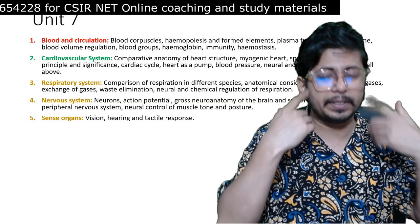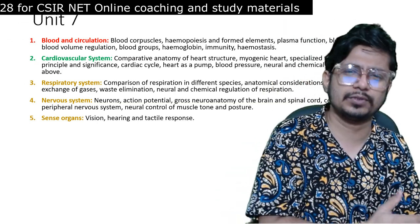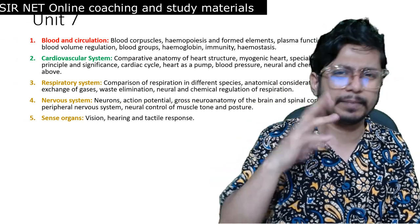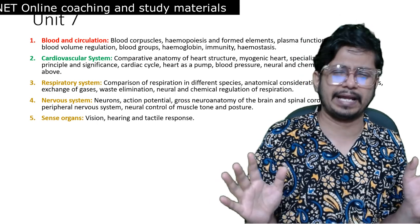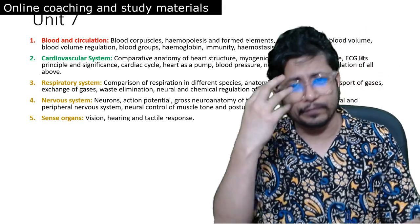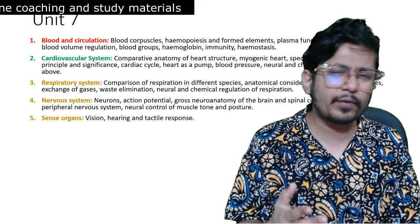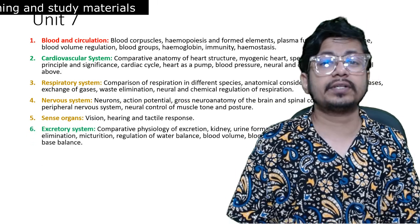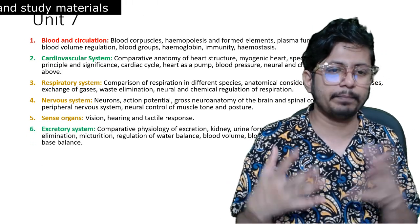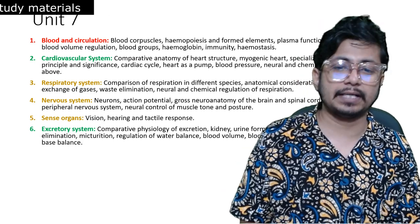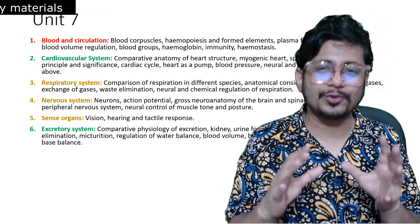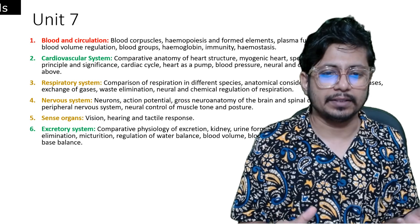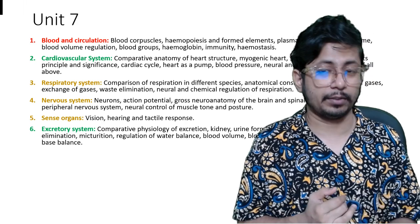Sense organs — particularly vision — are in the yellow moderately important category. CSIR-NET has asked many questions about rod and cone cells and their involvement in vision. Not much regarding hearing, and not much on tactile response. Vision is the most important, but the number of questions from this topic is decreasing gradually. The excretory system is very, very important. Most important is the formation of urine and the role of the nephron, waste elimination, and how blood volume and blood pressure are regulated.